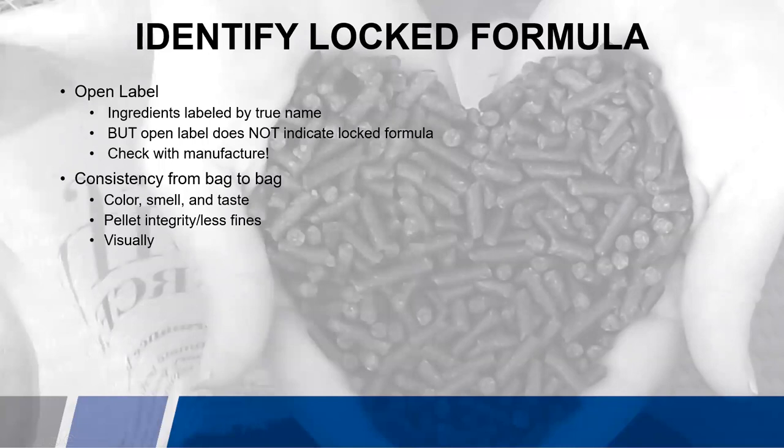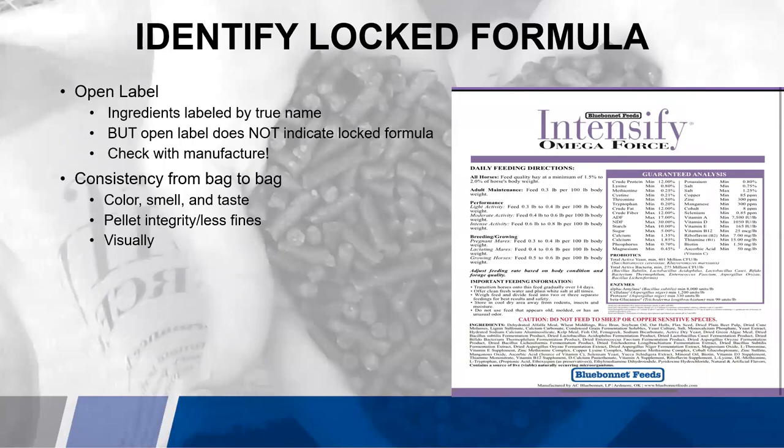Another way of identifying a locked formula is simply consistency from bag to bag. We talked about how color, smell, and taste can change with the ingredients. If you have a more consistent product from bag to bag, it gives you a lot more comfort knowing it's more than likely a locked formula. Pellet integrity and less fines — we talked about that earlier. And of course, visually: is there more grain, less grain, more pellets, less pellets? All of those can tell you visually if it's more of a locked formula. But again, you'll need to check with the manufacturer to ultimately know.